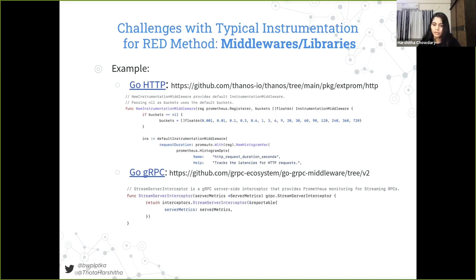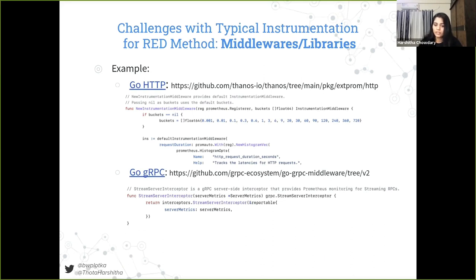Those libraries help with maintainability and avoiding mistakes, but we still have problems. We still might not have access to the code. Applications can be done in many languages, so you would need consistent libraries in different languages, and those middleware and libraries might not exist in all languages. We know it works in Go, but maybe not for other languages like Java, Ruby, Python, etc.